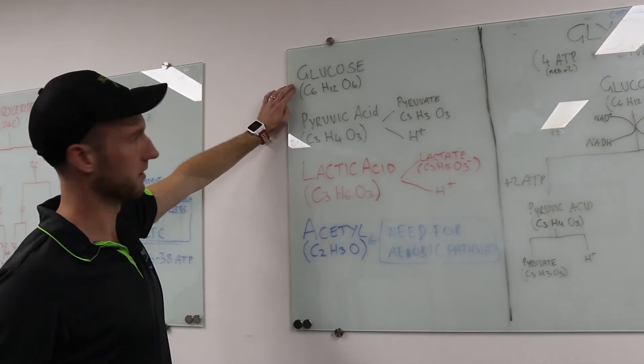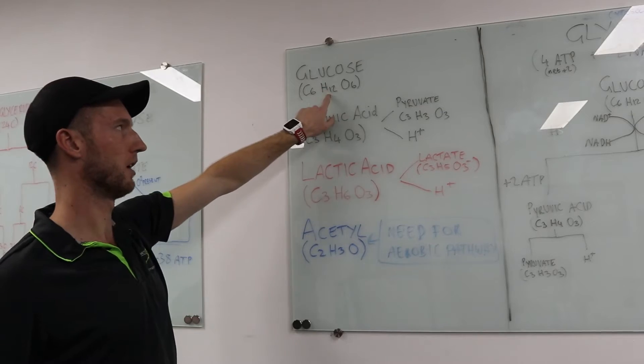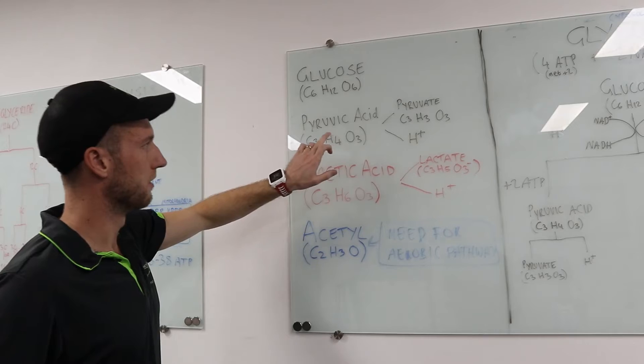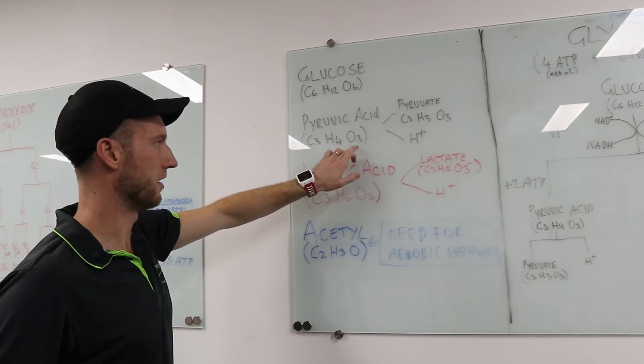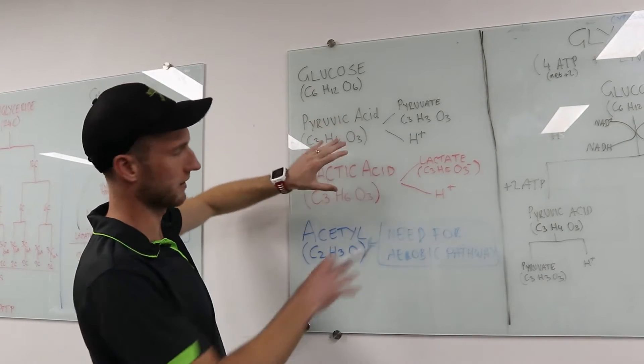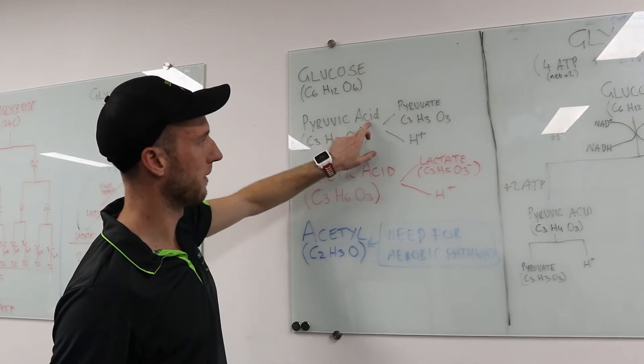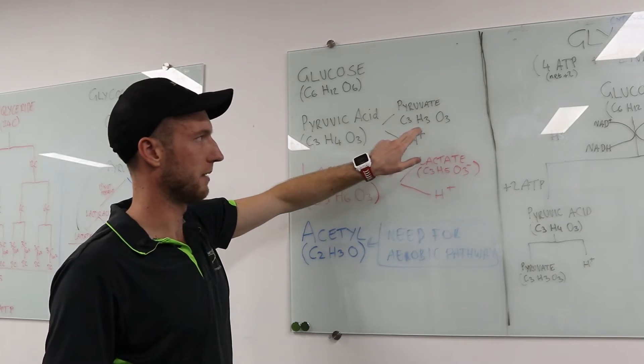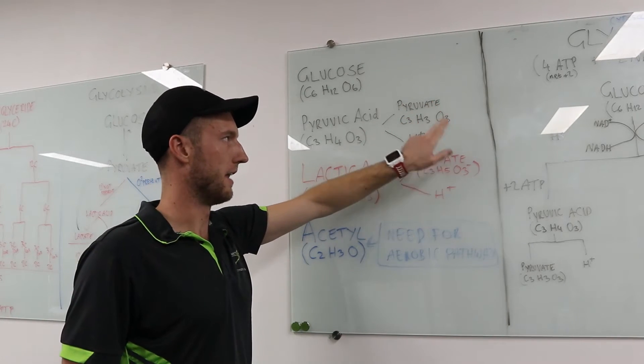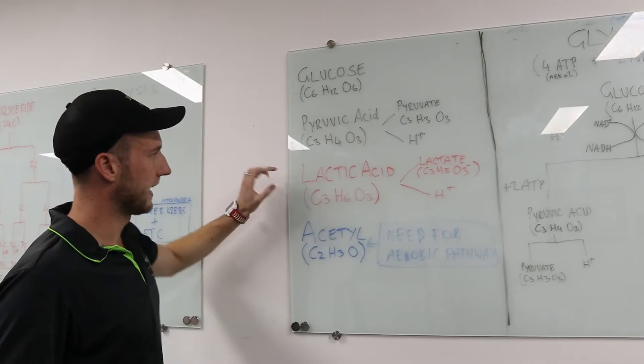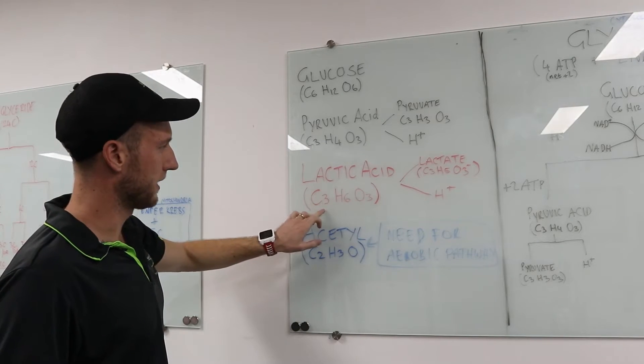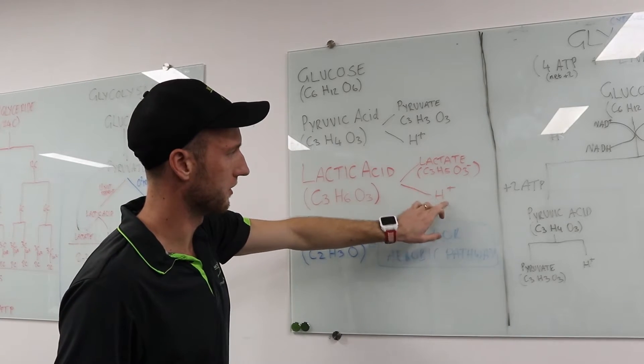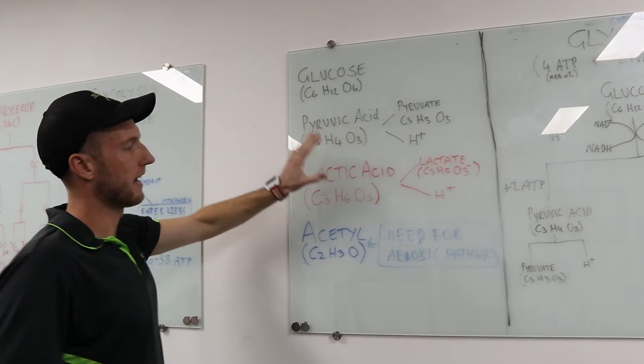We have glucose. The chemical formula for glucose is six carbons, twelve hydrogens and six oxygens, C6H12O6. Pyruvic acid, three carbons, four hydrogens and three oxygens, C3H4O3. It's very similar to glucose. This can break down just like lactic acid can break off. Pyruvic acid will break down to a hydrogen ion which is acidic obviously and pyruvate which is three carbons, three hydrogens and three oxygens. Another one, lactic acid, all I've heard of that. That is three carbons, six hydrogens and three oxygens, C3H6O3. Breaks down to lactate which is one less hydrogen because that comes off here, C3H5O3.